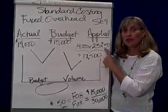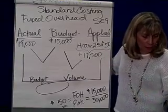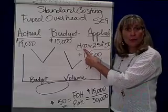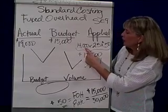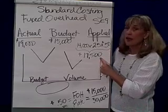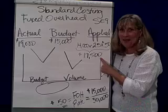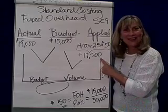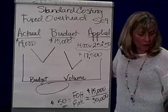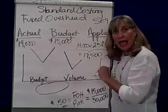So we've got the two standards now. The problem says we actually produced and sold 14,000 pens. So 14,000 pens times 2.5 hours times $0.50 means that we applied overhead — remember, debit WIP, credit overhead — for $17,500.